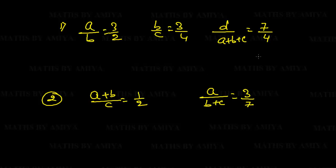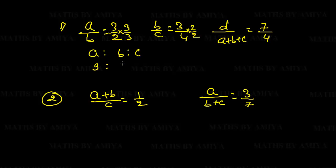Now practice: we have two ratios and need to find A:B:C:D from the first and A:B:C from the second. Here B is common in both. B = 3 in the first ratio and B = 2 in the second. We cross multiply: multiply the second ratio by 3 and the first by 2. By merging, we get A:B:C = 9:6:8. Now we have the ratio D/(A+B+C) where the relation A+B+C = 4 from that ratio.